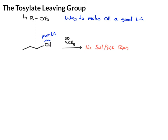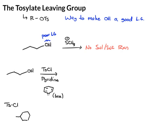What we can do instead is convert this OH into a tosylate, which will then be a good leaving group. To convert the alcohol to a tosylate, we add tosyl chloride and pyridine. Pyridine is basic because of the lone pair on the nitrogen. Tosyl chloride is a large structure — it contains the tosylate group — and by adding tosyl chloride and pyridine to an alcohol, we form the tosylate.